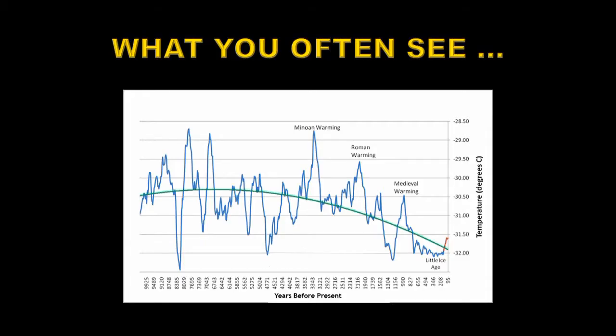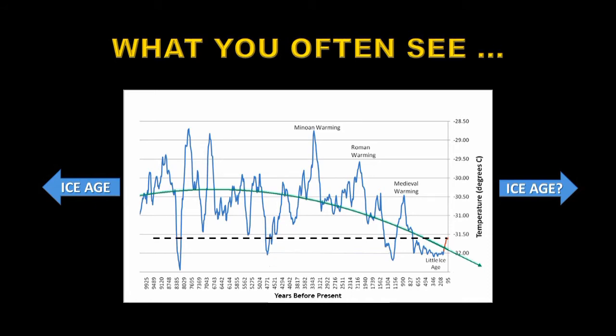This is a plot of temperatures over the last 10,000 years. Anything to the left of this was in the previous ice age. They've fitted a green curve to this data that shows a distinct downward trend over the last 5 or 6,000 years, which implies that we're heading down towards another ice age. But is that really the case? According to this plot, this is our current temperature, and you can see that for most of the past 10,000 years, temperatures have been significantly warmer than they are today. That's the argument that is often used. But let's see what's really true.